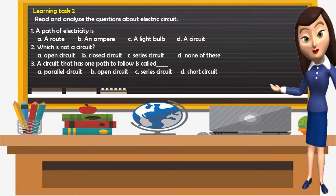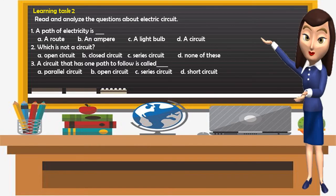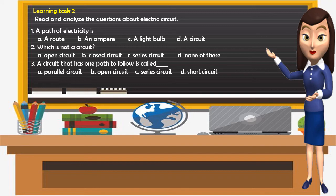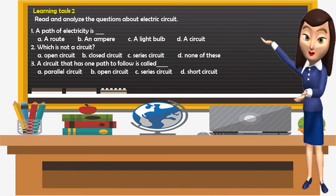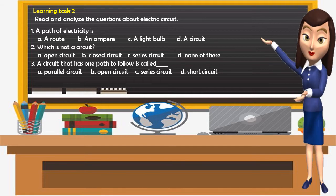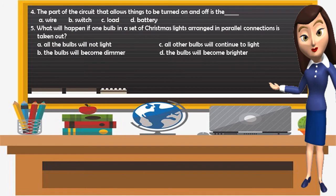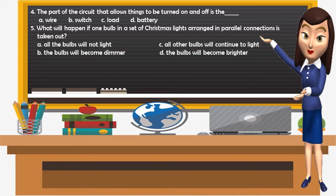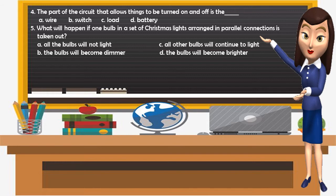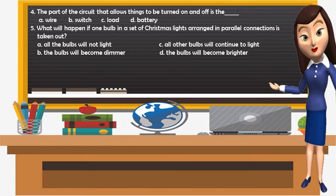Now let's have an activity. Learning Task 2 — read and analyze the questions about electric circuits. Number 1: a path of electricity is blank. Number 2: which is not a circuit. Number 3: a circuit that has one path to follow is called blank. Number 4: the part of a circuit that allows things to be turned on and off is the blank. Number 5: what will happen if one bulb in a set of Christmas lights arranged in a parallel connection is taken out?